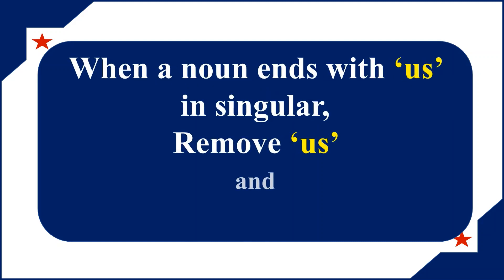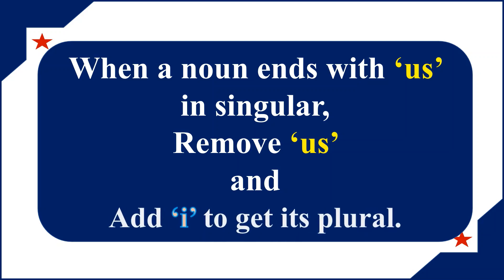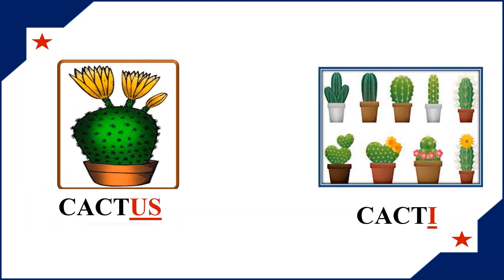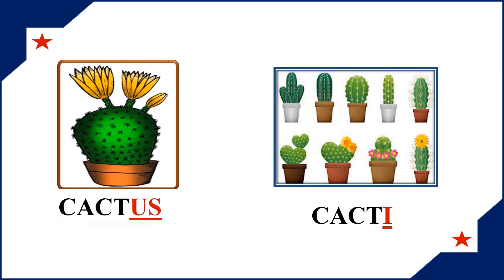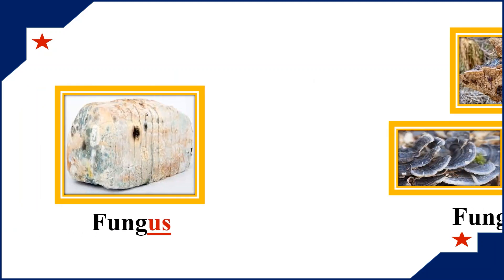For example, cactus → cacti. Here the word 'cactus' ends with the letters '-us'. For plural, we remove '-us' and add '-i', so that we get the plural form of cactus as cacti. Likewise: fungus → fungi, radius → radii.